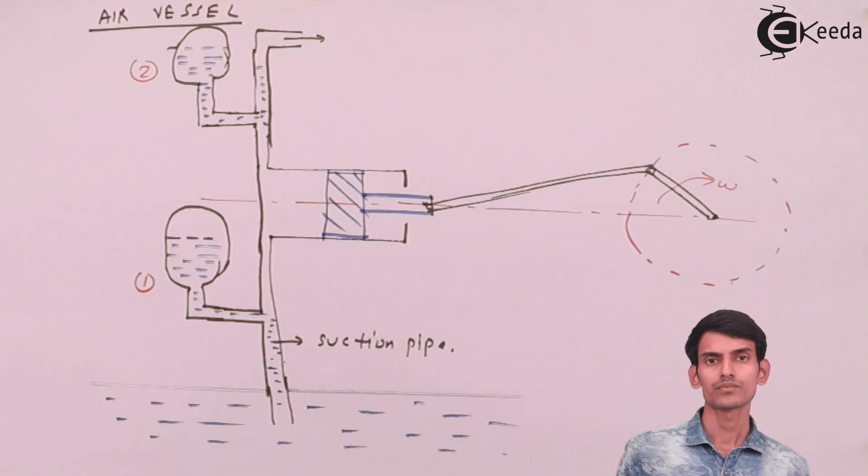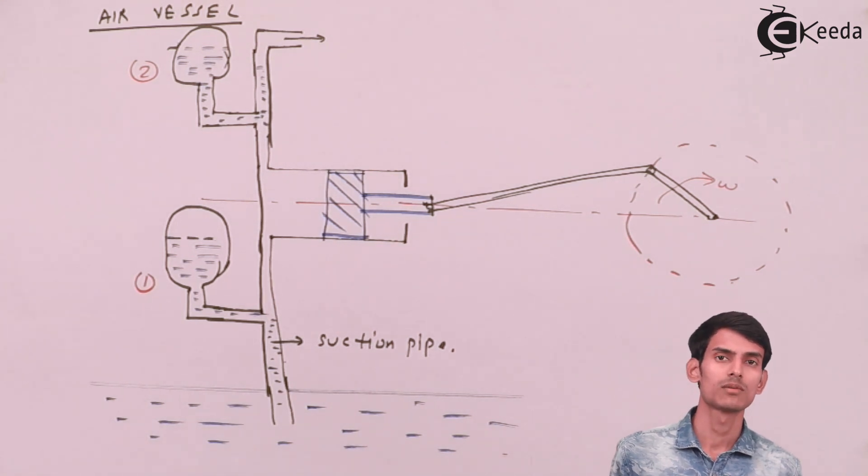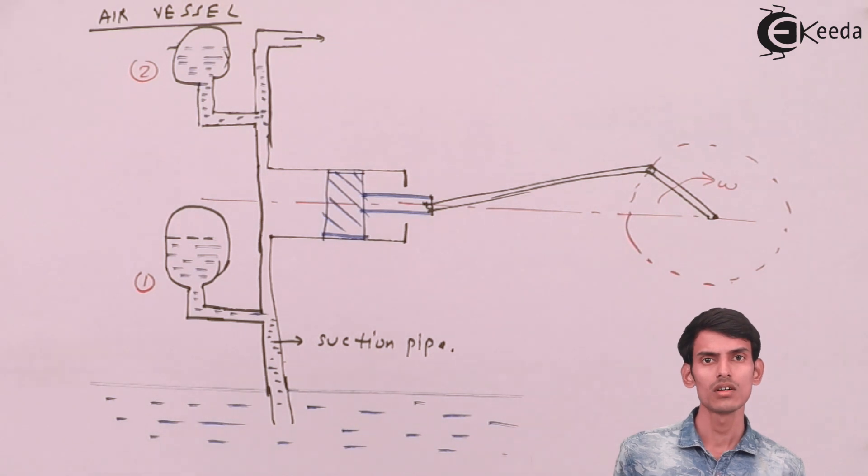Air vessel helps in absorbing all the pressure fluctuations. It helps in absorbing all the discharge fluctuations that are taking place in the pump.